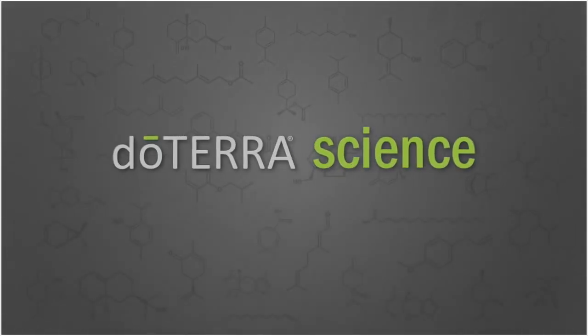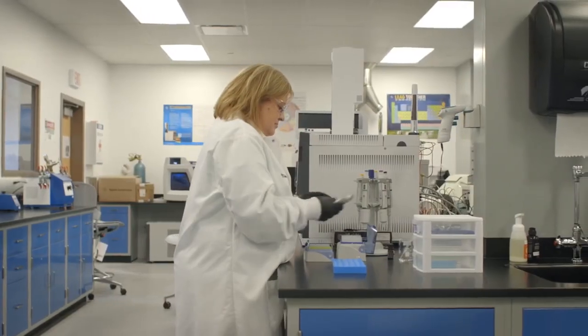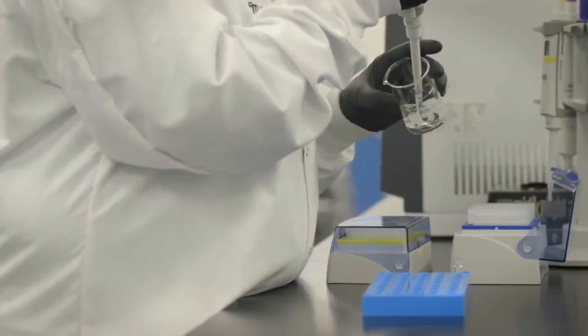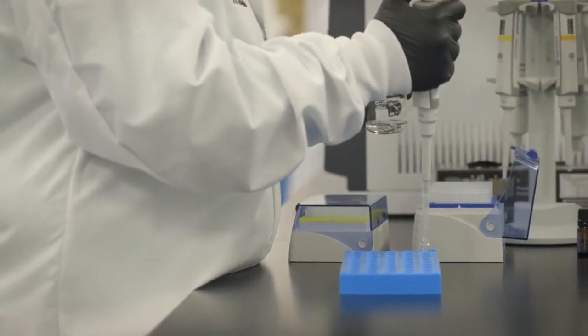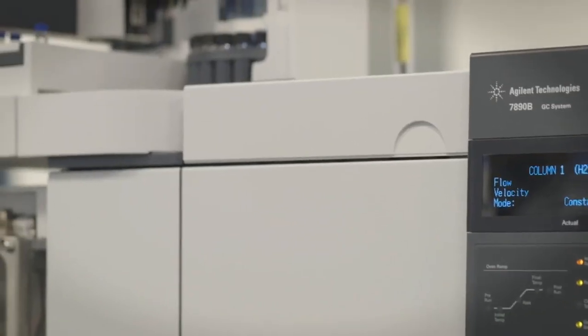GC-MS, or gas chromatography mass spectroscopy, is the workhorse machine we have in the lab that helps identify each essential oil. It aids in determination of the purity and strength, as well as the composition of each essential oil. It'll also help identify potential contaminants that shouldn't be in an oil.